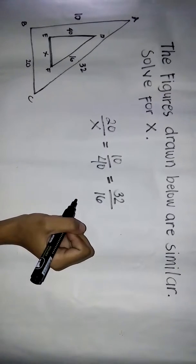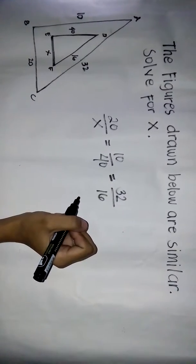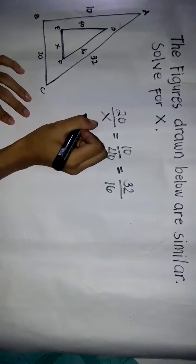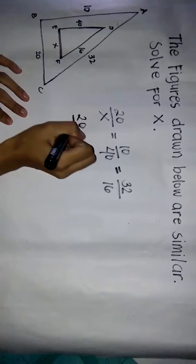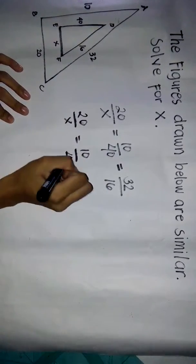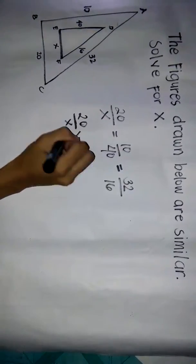Now, to solve for X using the first proportion, 20 over X equals 10 over 40. Then, using the cross product.